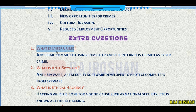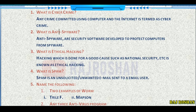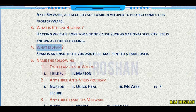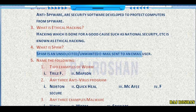These are some extra questions from the book chapter. What is cyber crime? Any crime using a computer and the internet is called cyber crime. What is anti-spyware? Anti-spyware is security software developed to protect a computer from spyware. What is ethical hacking? Hacking which is done for a good cause such as national security is known as ethical hacking. What is spam? Spam is an unsolicited, unwanted email in your mail ID.